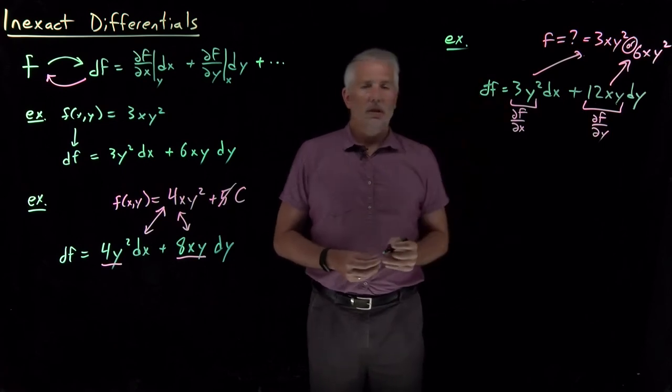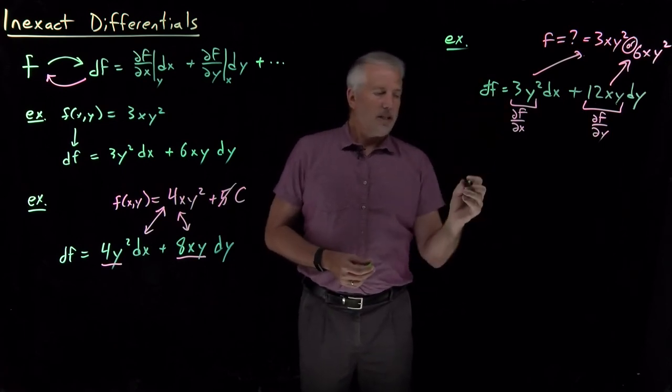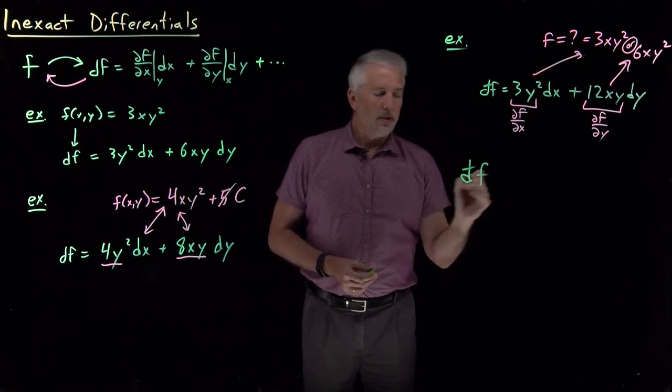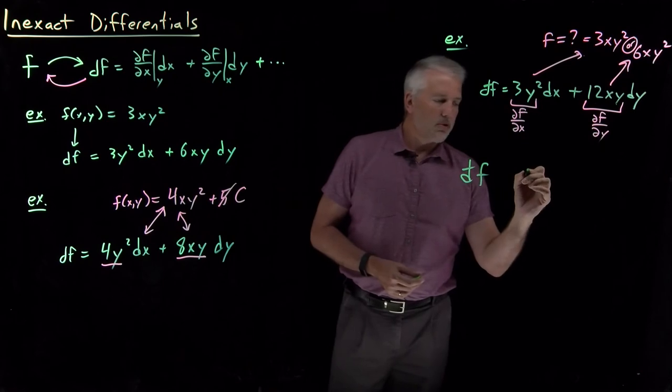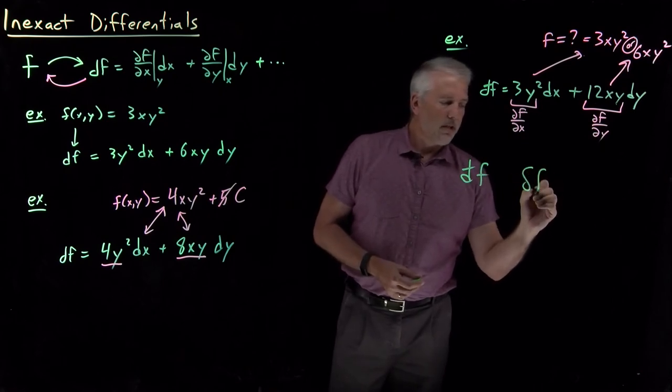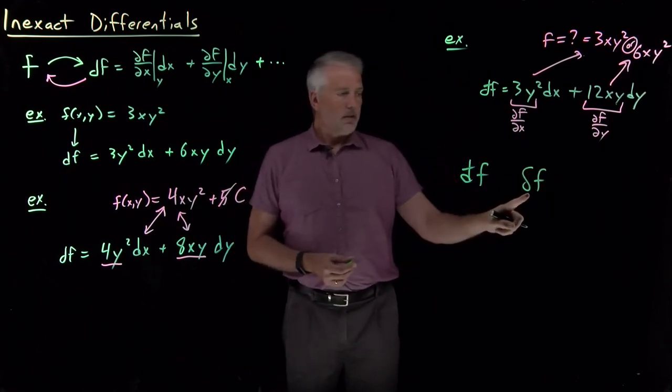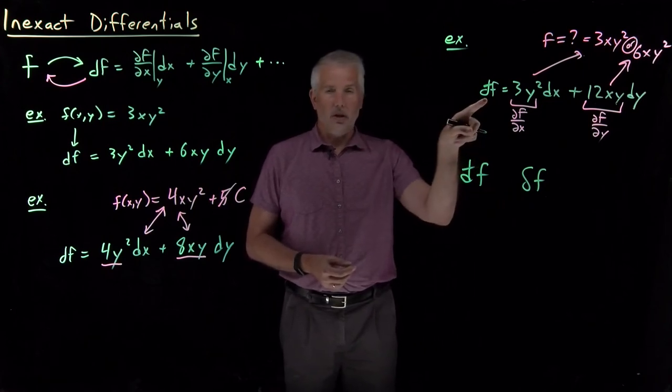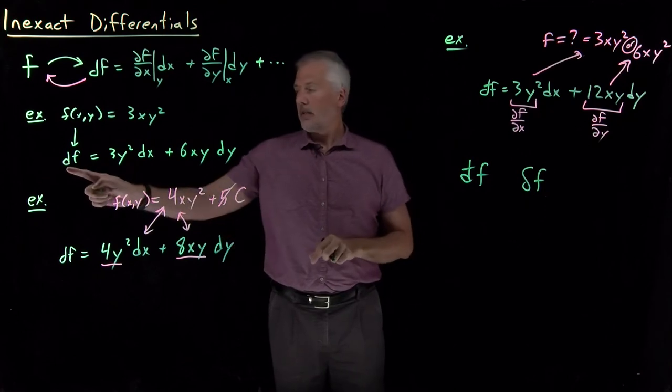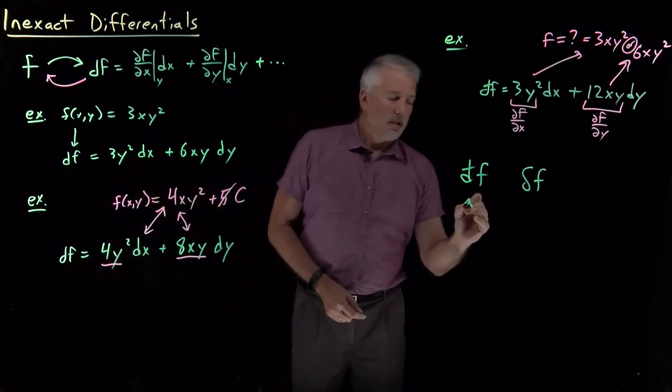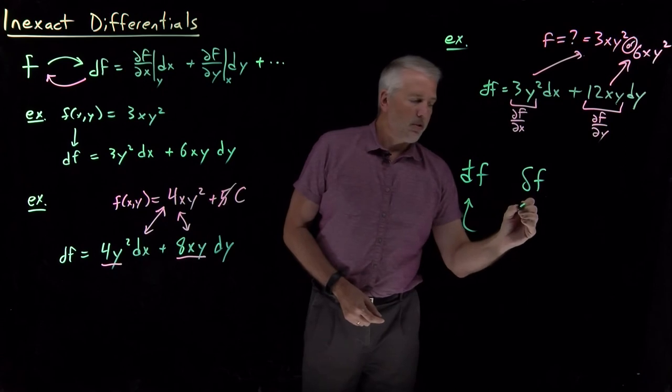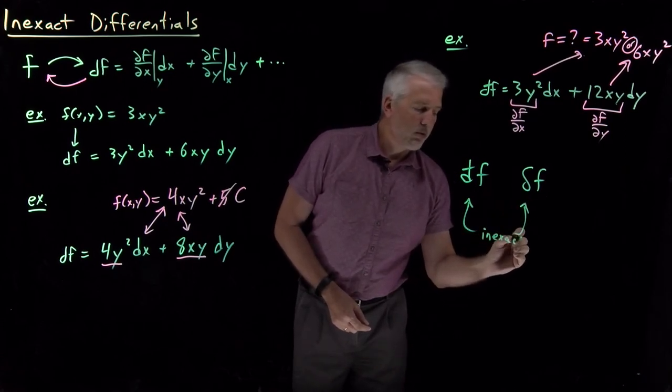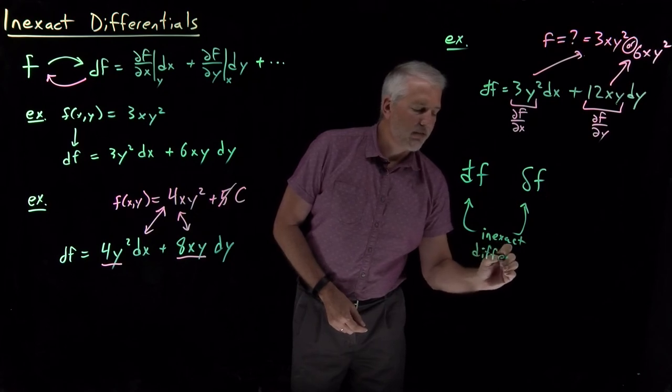What we actually do for quantities like this is we call them inexact differentials. So what that is is I've written a d with a cross through it. Some books or some professors may prefer to write a delta in this form. So either one of these is fine. Instead of using a lowercase d to represent an exact differential, if we either put a bar through the d or we use a delta to represent the differential, then what we're expressing is this differential is an inexact differential.